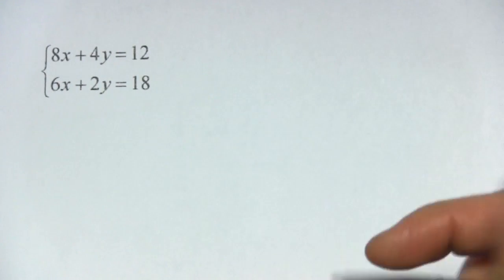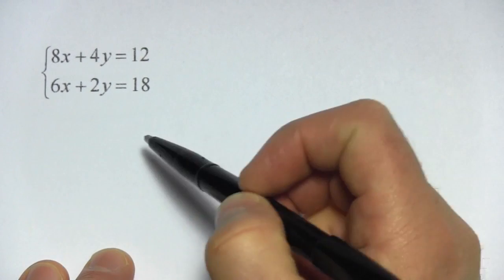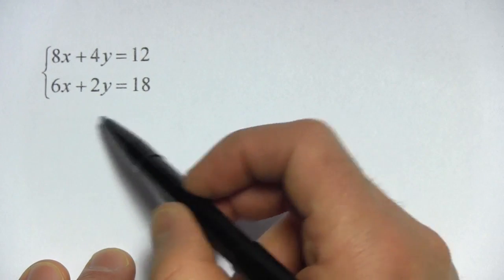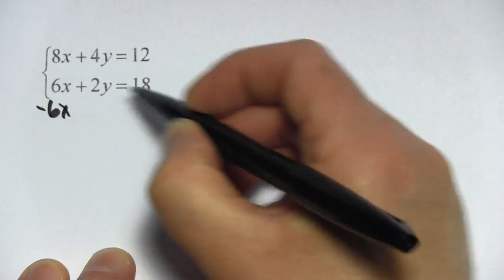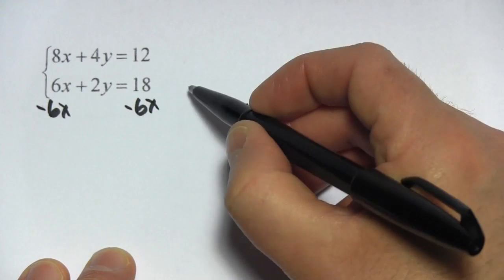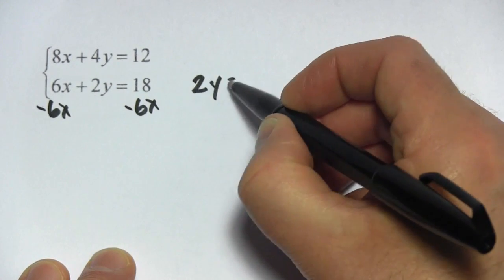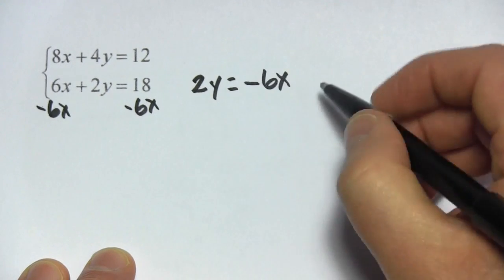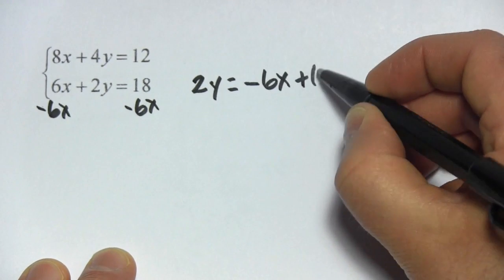This one's got an extra step in it. I think I'm going to solve this second equation again for y. So first I'd have to subtract 6x from both sides, and I would get 2y equals negative 6x. I'm just going to put that x term first, plus 18.